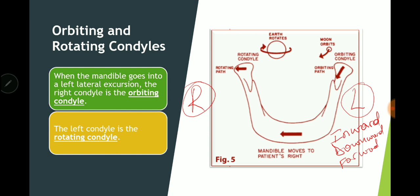The orbiting condyle moves inward, then downward, and then forward, orbiting about the rotating condyle. While the orbiting condyle moves inward, downward, and forward, the rotating condyle moves outward. This is important — exam questions may ask it in different ways, so make sure you understand the principle. The orbiting path is the path of movement of the orbiting condyle, and the rotating path is the path of movement of the rotating condyle.